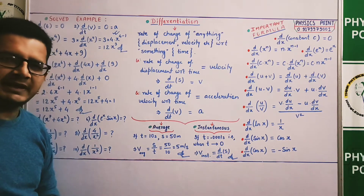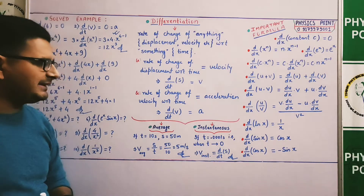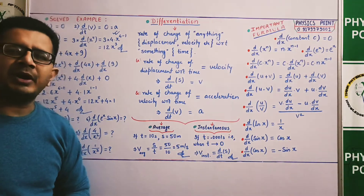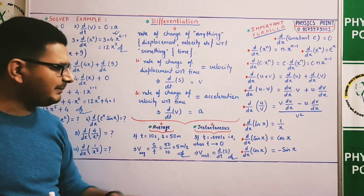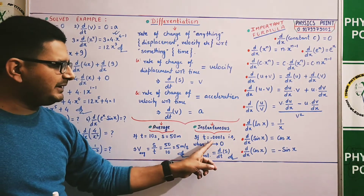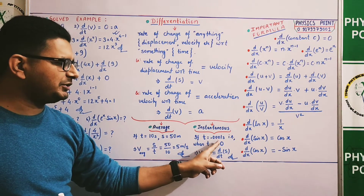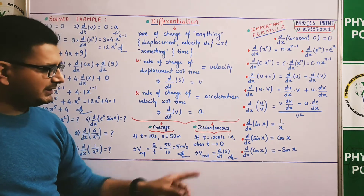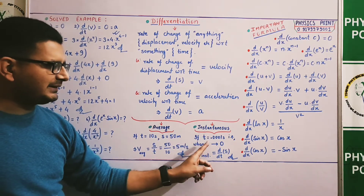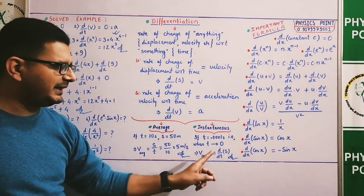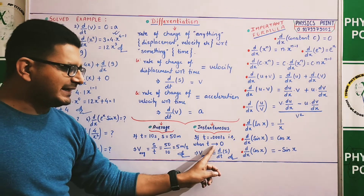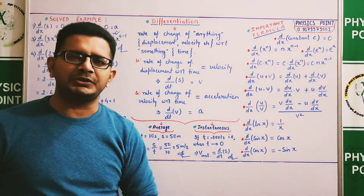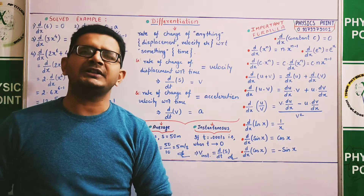So this is the result of time when the time is very small. For example, the value of time is 0.0001 seconds, means the time is very small. So we can say that the time duration approaches 0, which means the time interval is very small.